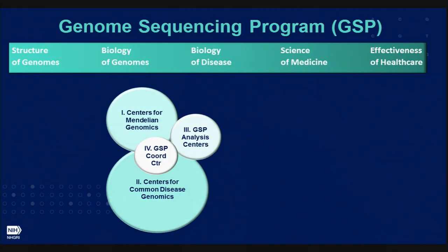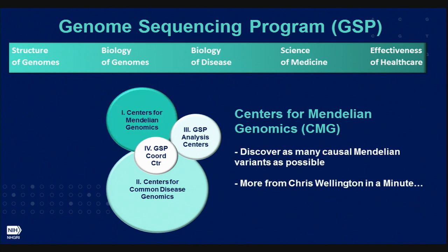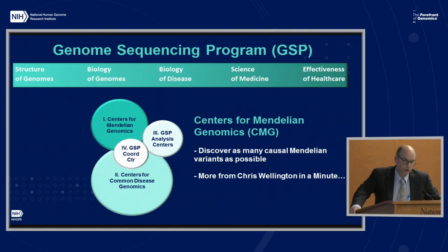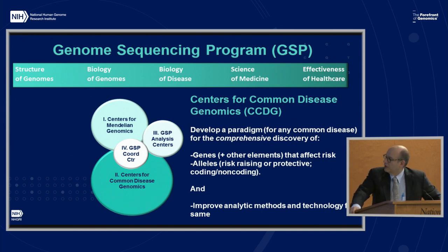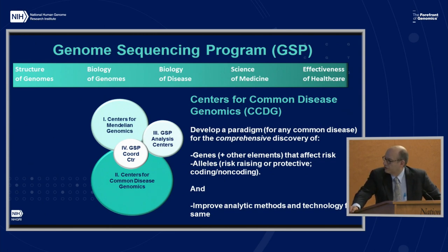Some orientation. I know Eric talked a little bit about this in his director's report. The genome sequencing program has four major elements situated between biology of genomes and biology of disease on our current strategic scheme. They consist of the following four components: the Centers for Mendelian Genomics, whose aim is to discover as many causal Mendelian variants as possible. And Chris will pick up on this in a few minutes.